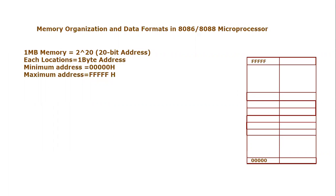Bismillahirrahmanirrahim. Assalamu alaikum everyone. In this tutorial we are going to consider the memory organization and data formats available in the 8086 microprocessor. We have already discussed that memory is divided into various segments. We need to know how memory as a single chip or bank is organized, how data is placed inside it, and how one can access the various information stored inside the memory attached to the 8086 or 8088 microprocessor, whether that information is code or data.